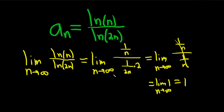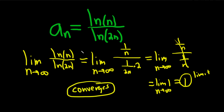This limit is equal to 1, so this is called the limit of the sequence. Because we got a number, we say it converges. Whenever you have infinity over infinity you can use L'Hôpital's rule, but since these are sequences, just pretend they are x's in your mind. I hope this video has been helpful.